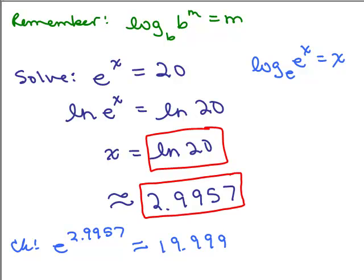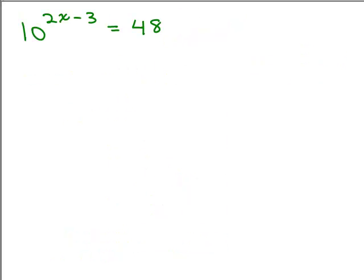All right, let's do another one. 10 to the 2x minus 3 equals 48. Again, the variable is in the exponent, so we want to take the log of both sides. The question is, do we want to take the log base 10 or log base E, the natural log? Usually, it doesn't matter which one you take, but in this case, since the base is 10, we may as well take log base 10.